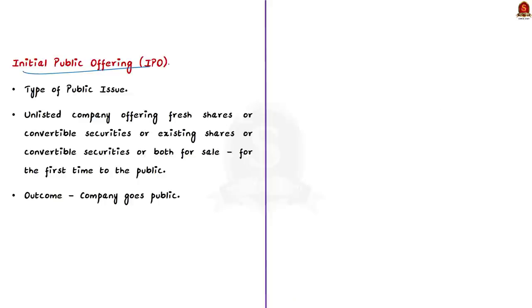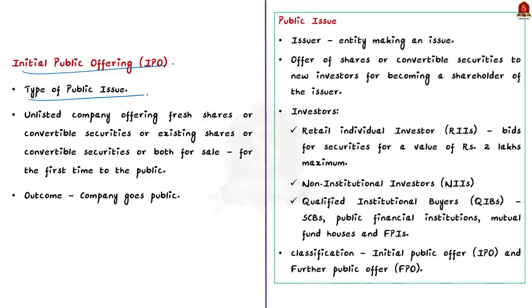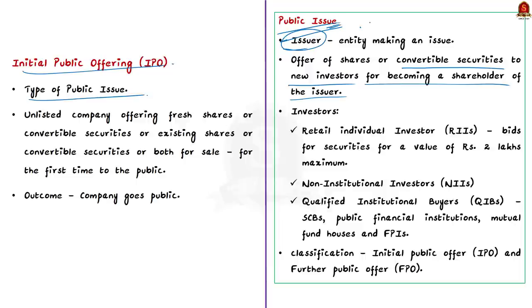IPO stands for Initial Public Offering. It is a type of public issue. An issue is a set of securities that a company or government offers for sale; the entity making an issue is referred to as the issuer. In India, issues made by an Indian company can be classified as public issue, rights issue, bonus issue and private placement issue. In a public issue, shares or convertible securities are offered to new investors for becoming a shareholder of the issuer. The investors could be retail individual investors, non-institutional investors, or qualified institutional buyers.